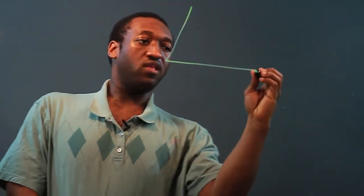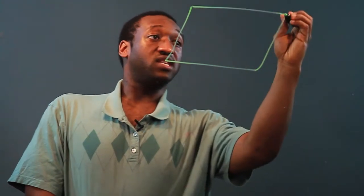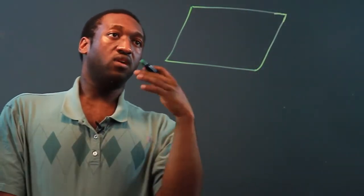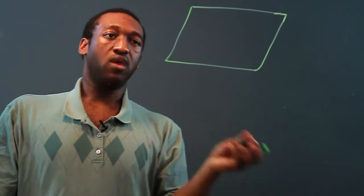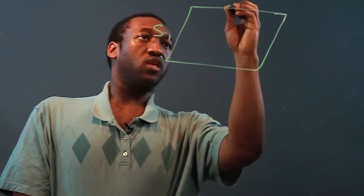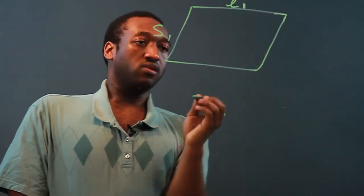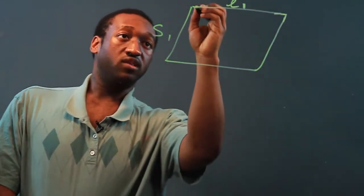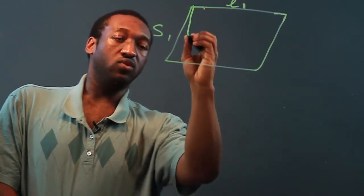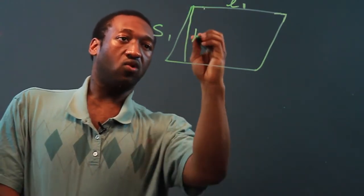If we have a parallelogram, and let's say it's not a rectangle, then we have basically three parts to it. Let's call side 1 S1, let's call length 1 L1, and the distance down from the length to the other length is called the height.